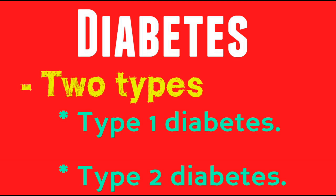Diabetes is a disease in which blood glucose or blood sugar levels are very high for a long period of time. Due to these high blood glucose levels, the patient feels increased urination, increased thirst, increased hunger, etc. Normal fasting blood sugar level is approximately 100 mg per dL.